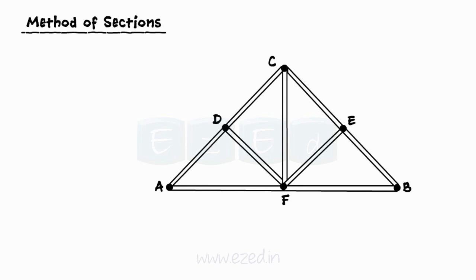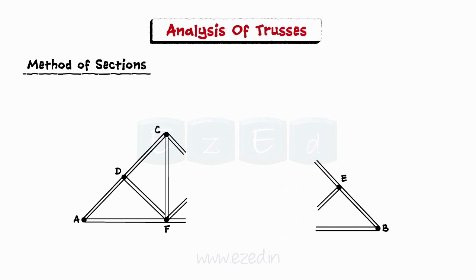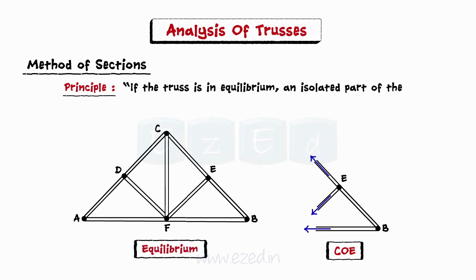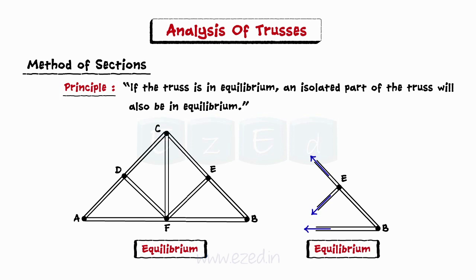As the name suggests, in this method we will cut the entire truss into two parts and then separate them, after which conditions of equilibrium are applied to any one part of the truss, and thus force in the members is calculated. The principle is: if a truss is in equilibrium, an isolated part of the truss will also be in equilibrium. This is used in this method.